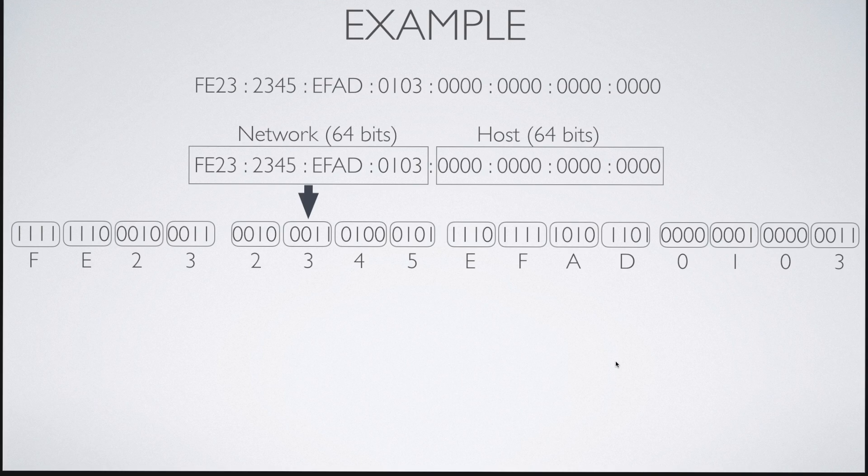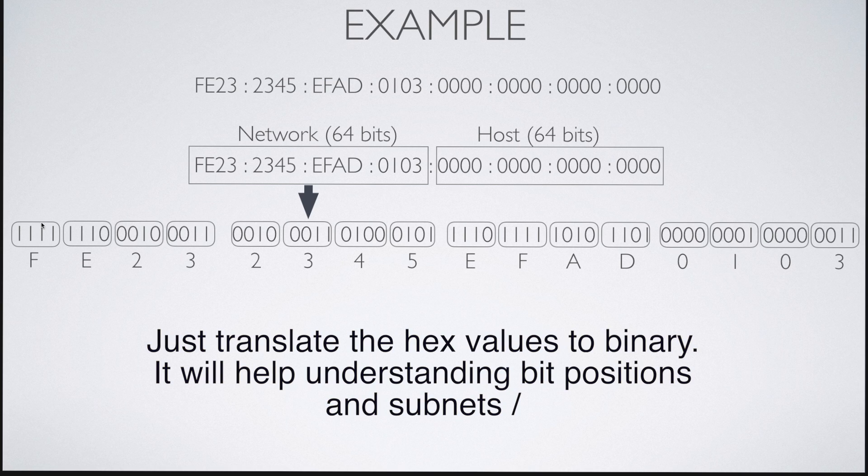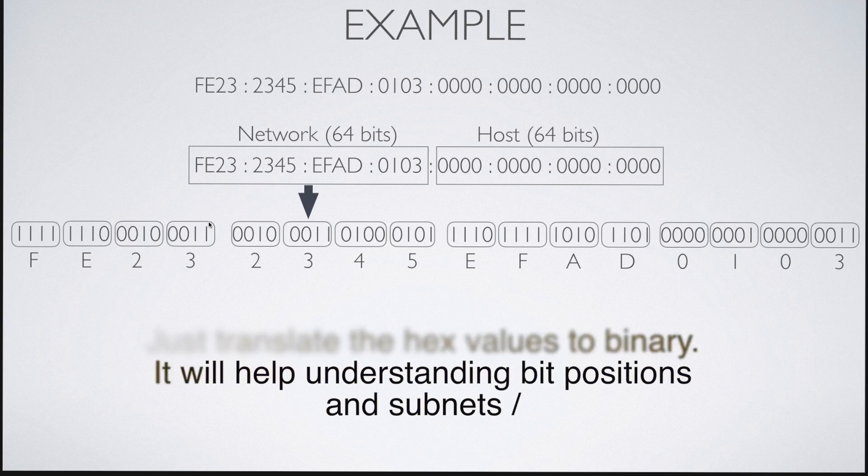Let's look at an example. Here we have our network address consisting of 64 bits and a host address. We can now break down the hexadecimal values of the network address into the individual bit patterns. As you can see, e equates to 1110, 2 equates to 0010, and so on.